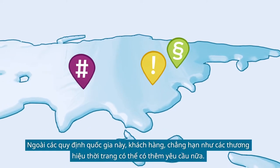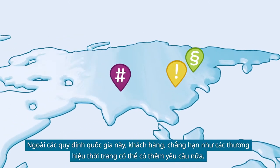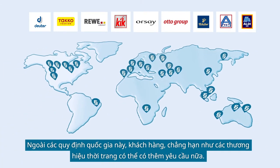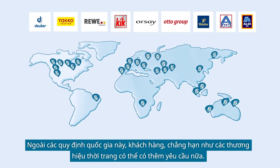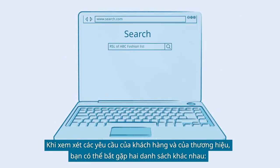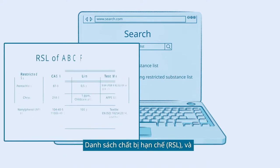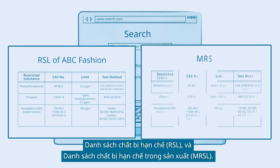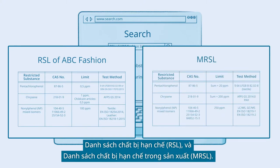In addition to these national regulations, customers such as fashion brands may have further requirements. While reviewing customer and brand requirements, you may come across two different lists: the Restricted Substance List and the Manufacturing Restricted Substance List.